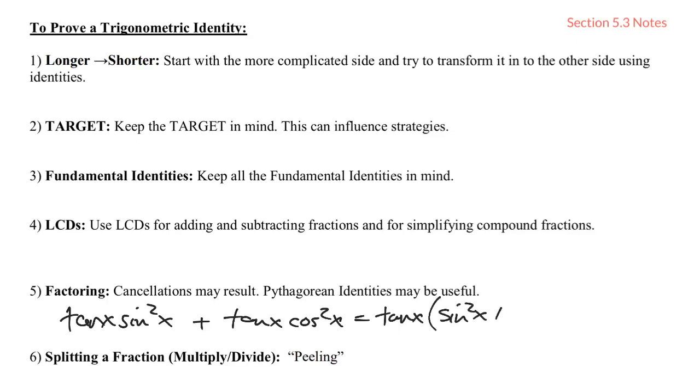Since both terms have a tangent, we were able to factor out a tangent x, and that left us with sine squared x plus cosine squared x, which then leads to a Pythagorean identity being left in the parentheses. This is just tangent x times one, but if you don't know to factor, you'll never get there. So don't forget about the possibility of factoring.